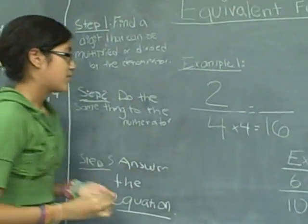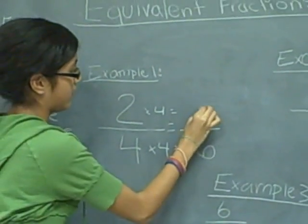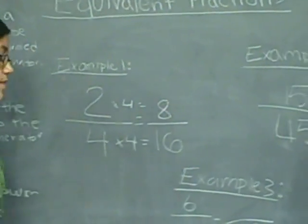And then we do the same thing to the numerator. So we multiply it by four, and we get eight. So that's our end, eight over sixteenths.